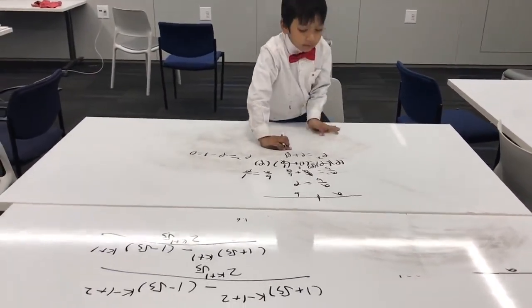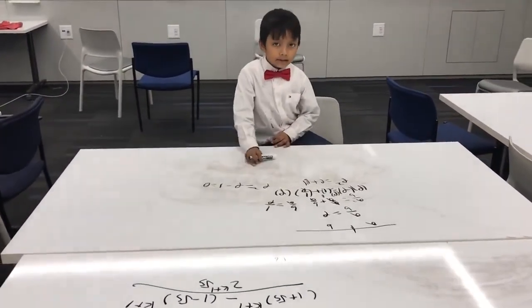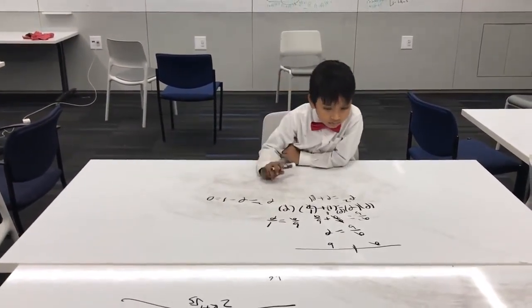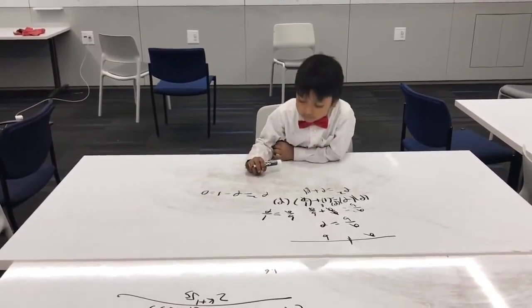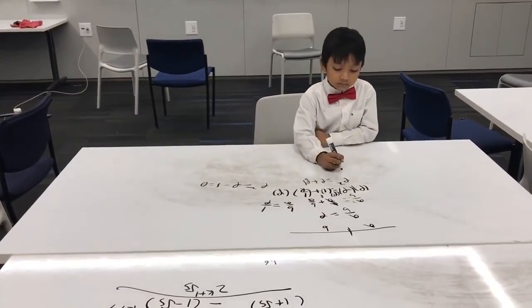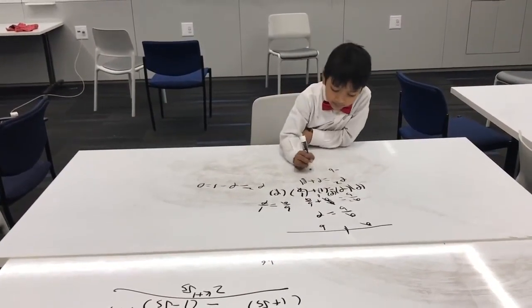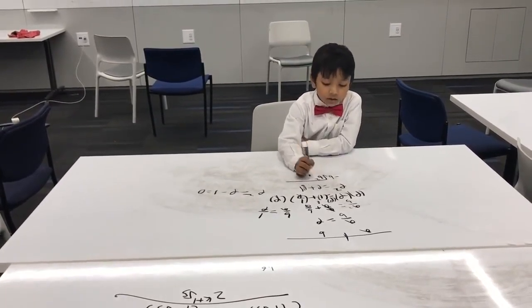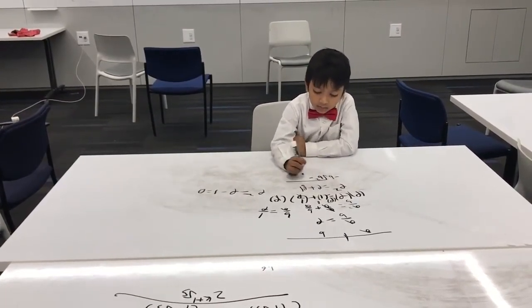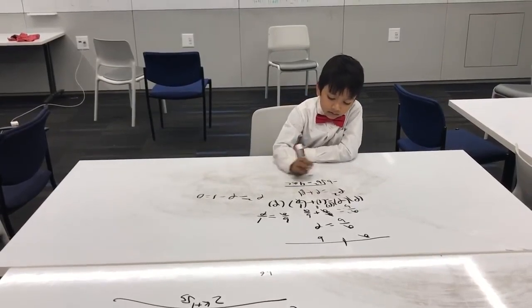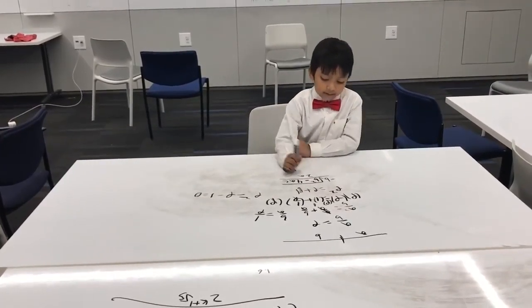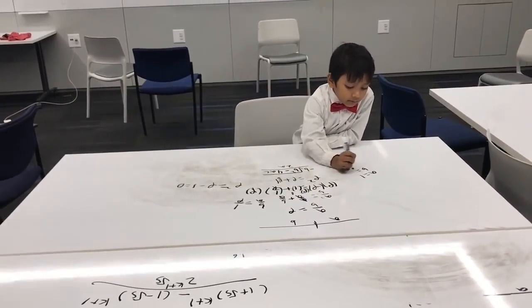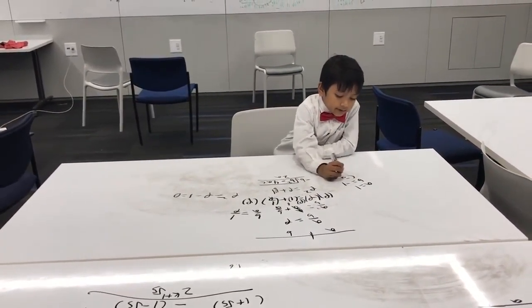So now I'm gonna go back down to the right here. So minus B plus or minus square root of B squared minus 4AC over 2A. So A equals 1, B equals minus 1, and so does C.